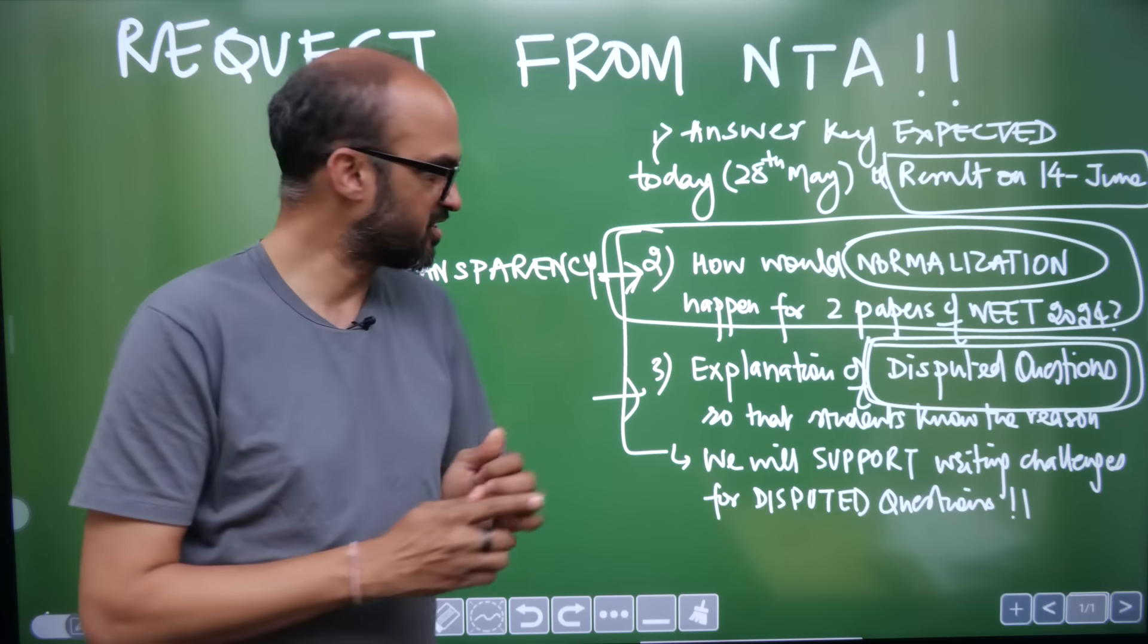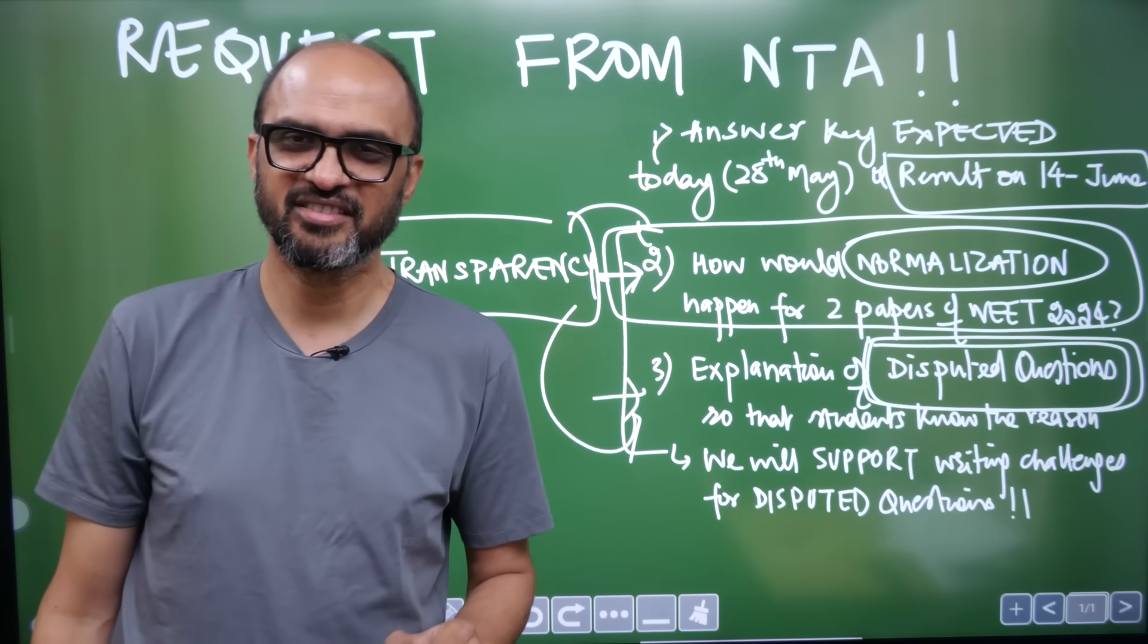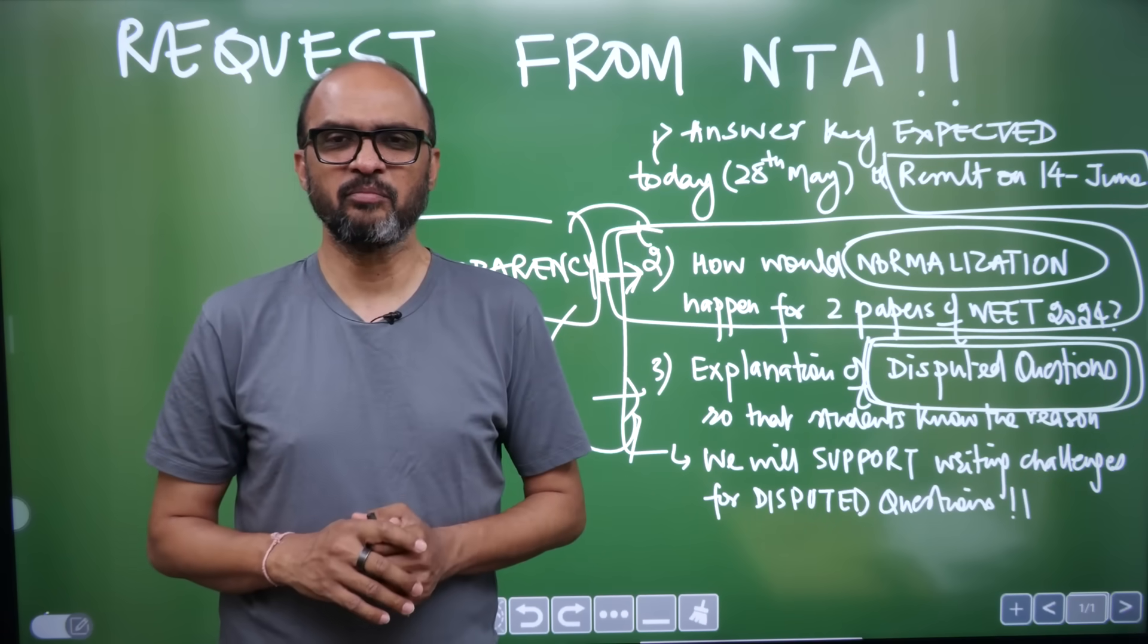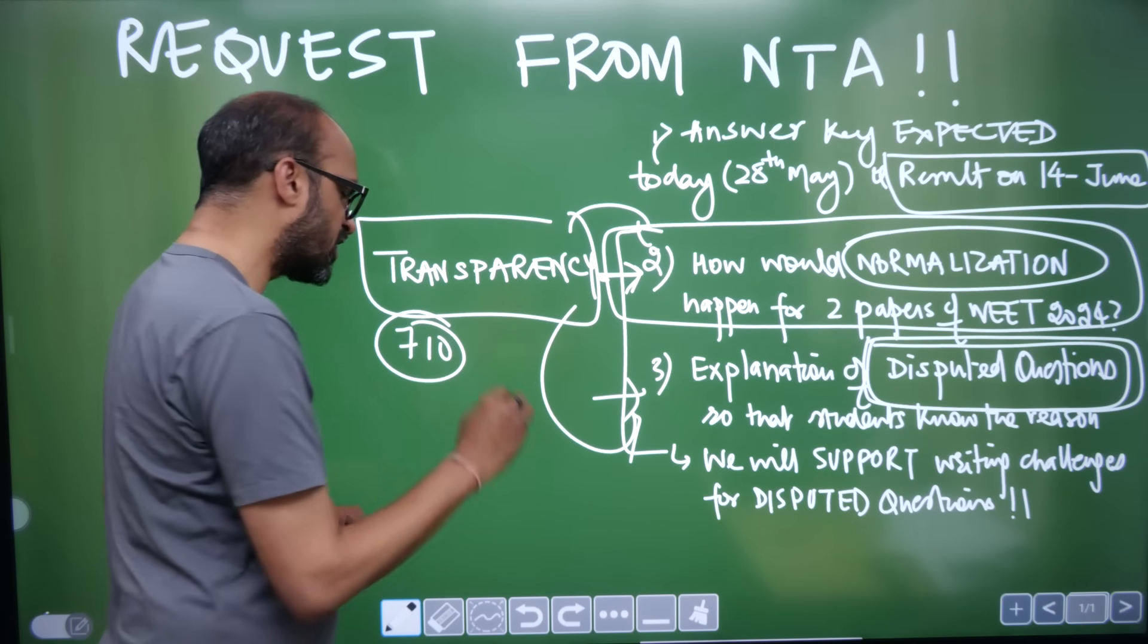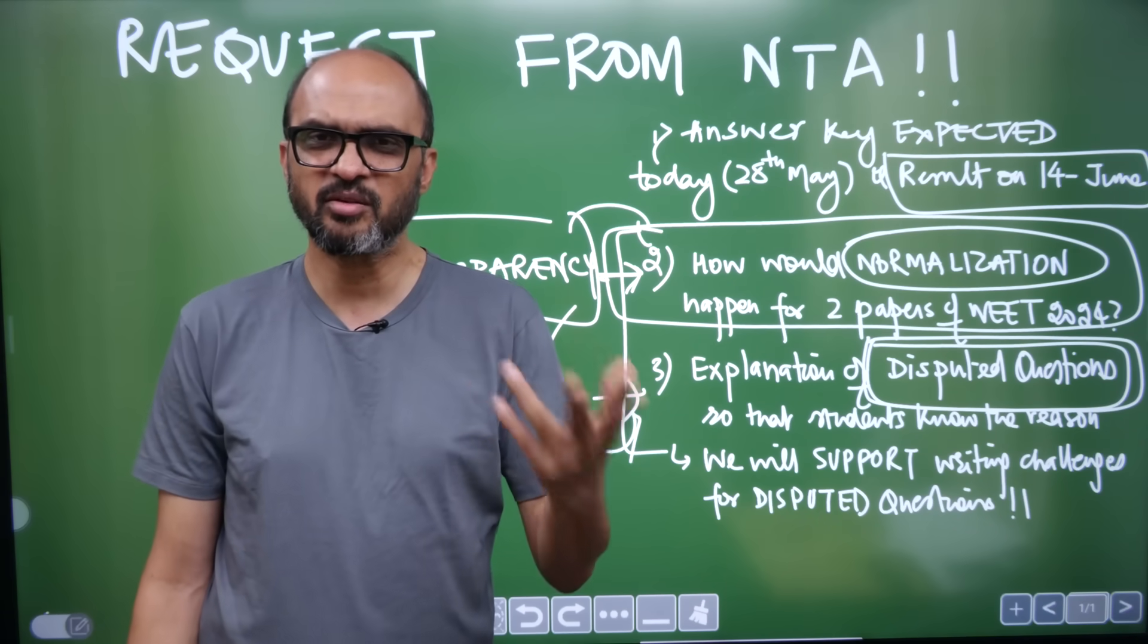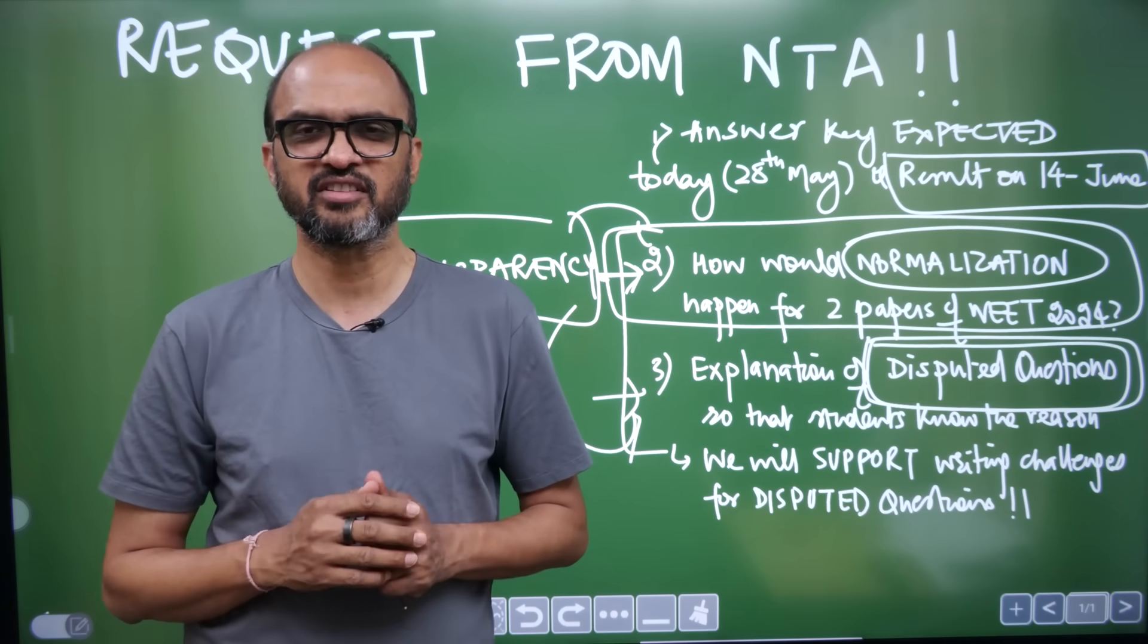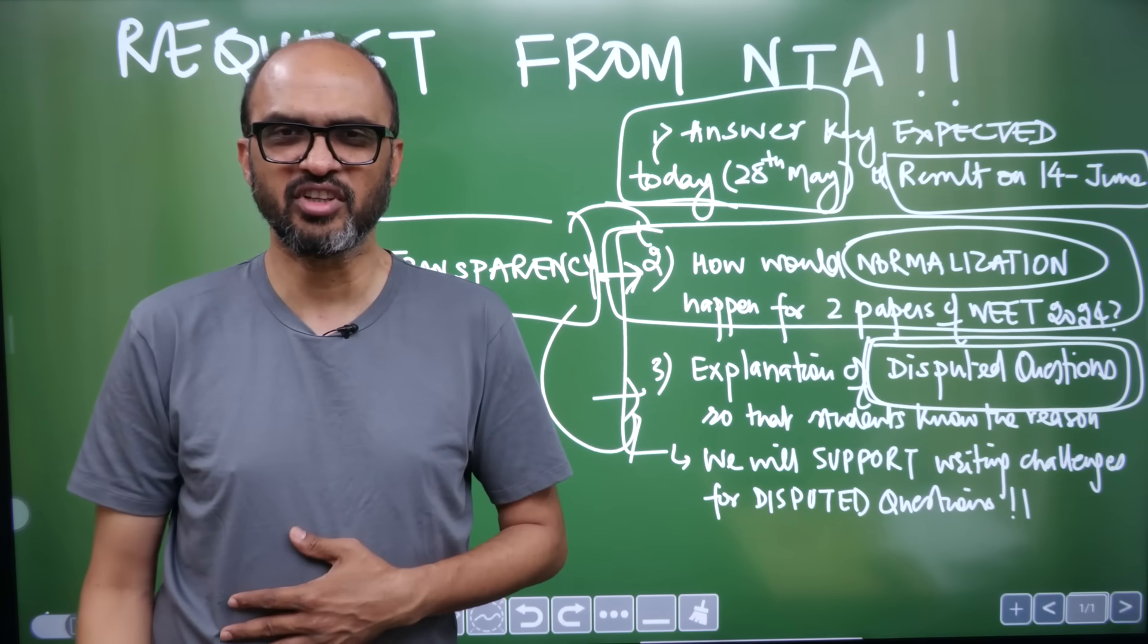Conducting the exam is not an easy job, but transparency should be there. At least in these two matters, my request to NTA is please tell us how you will normalize and give detailed explanation of disputed questions. On NEETprep.com, whatever question you want to challenge, you can logically explain it to us. That student who got 710, he has two biology questions - biodiversity and maybe one biotechnology and its applications, some Bt cotton related question. He explained it and Sharma sir committed to him that we will provide you the requisite challenge for the question. If you also feel any question should be challenged, my telegram ID is @kgneetprep. You can message there and we will help you once the answer key is provided and the challenge window opens.